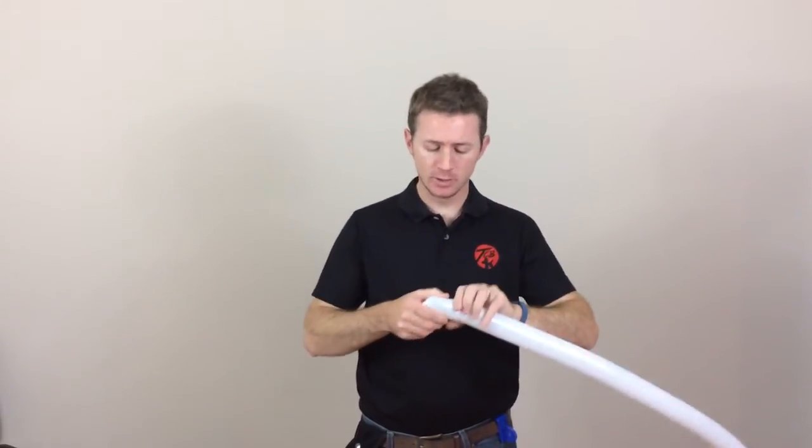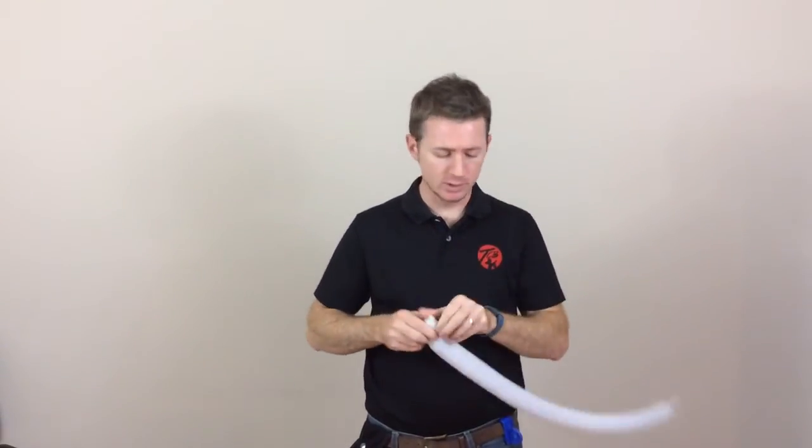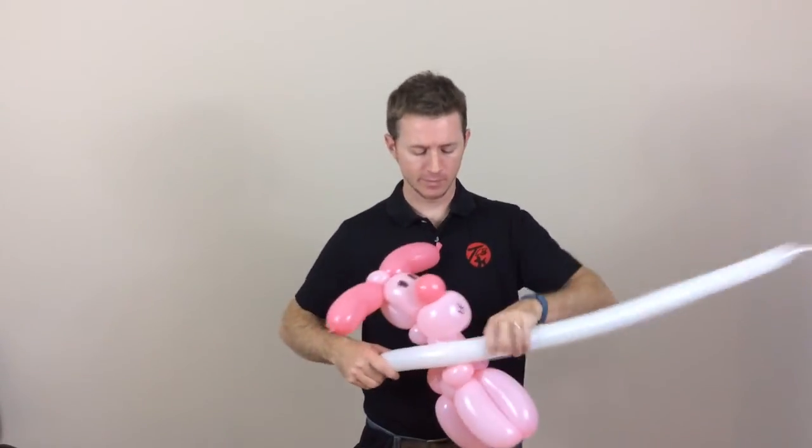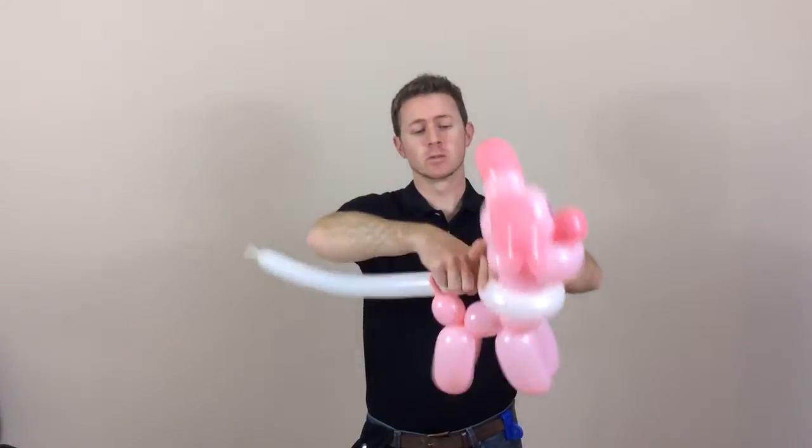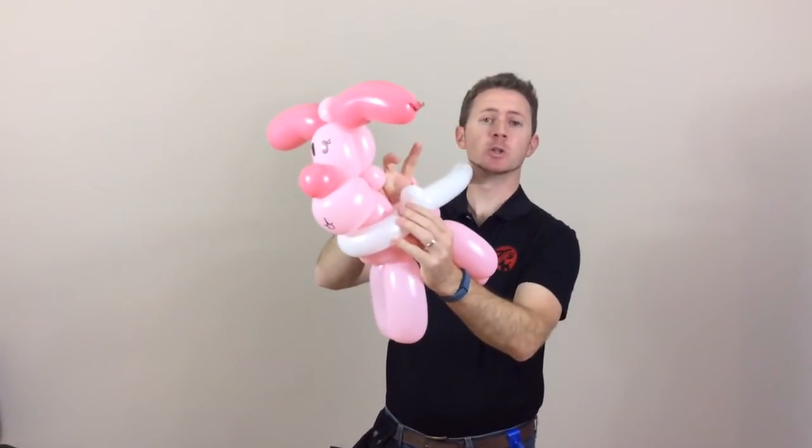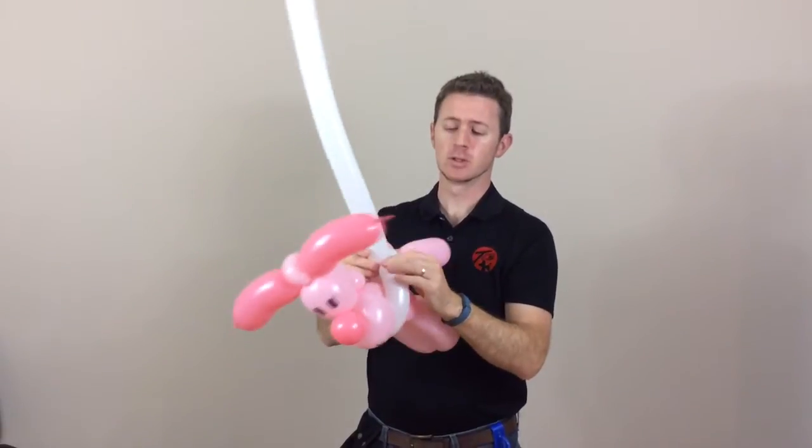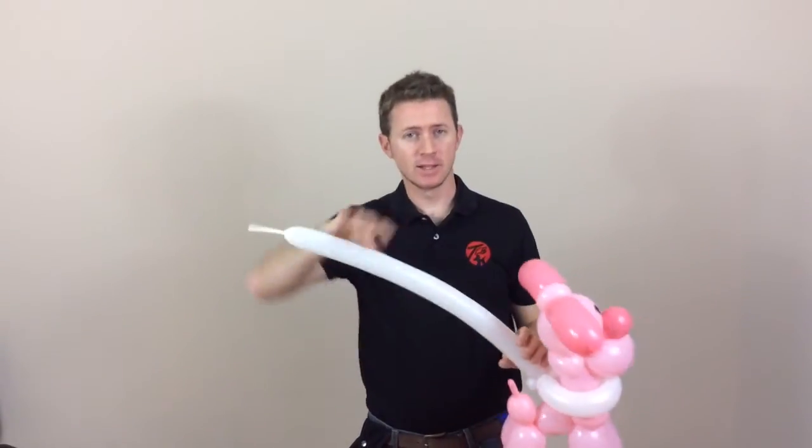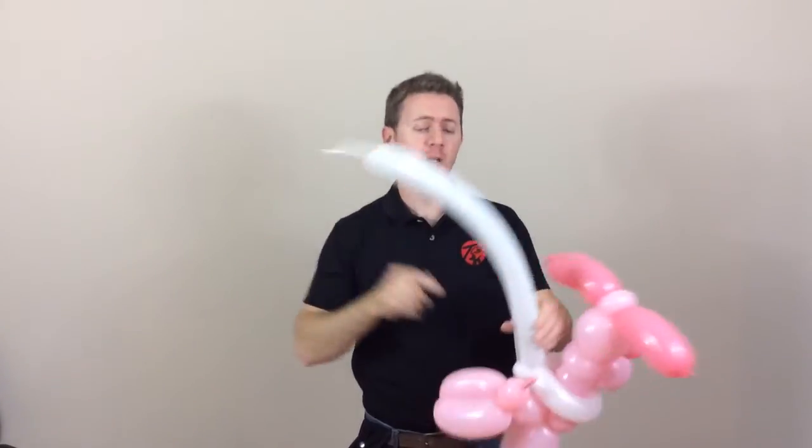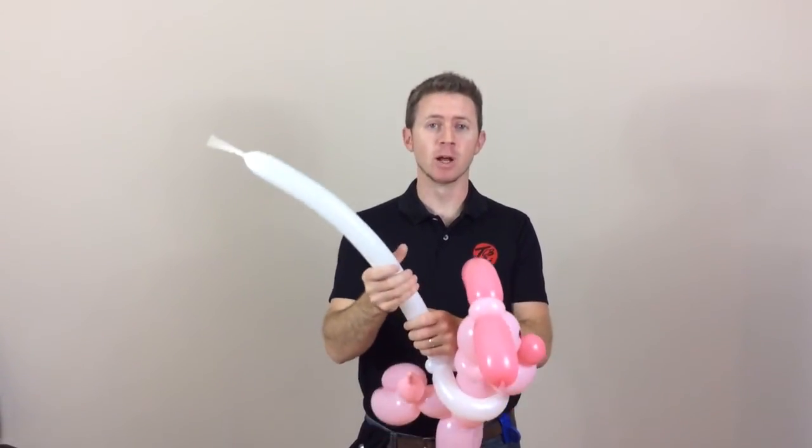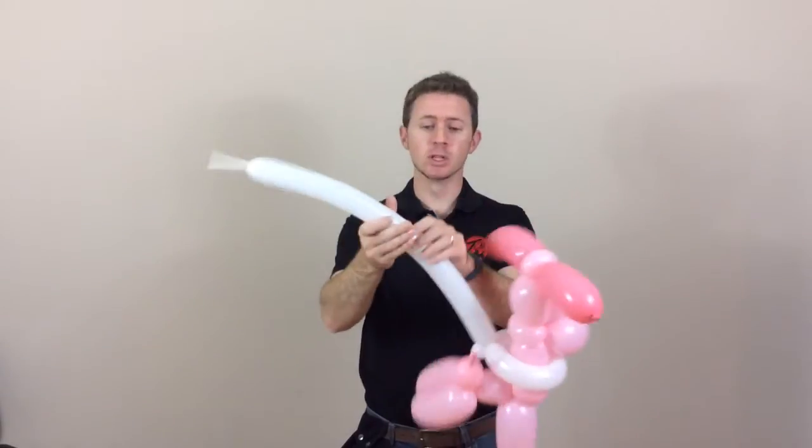And then make your leash. Start with a pinch twist. Wrap it around. Now always make sure that you roll this through. Because this, again, this is going to be going like this. And you don't want this coming undone. It's a waste of your time later on. And then I like to keep the leash short.